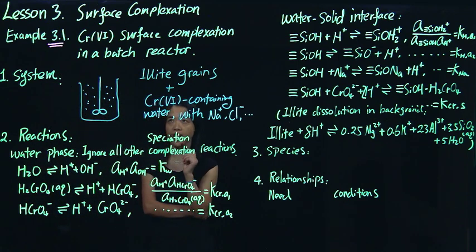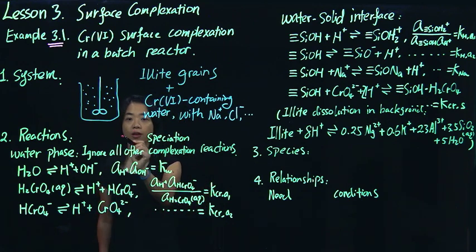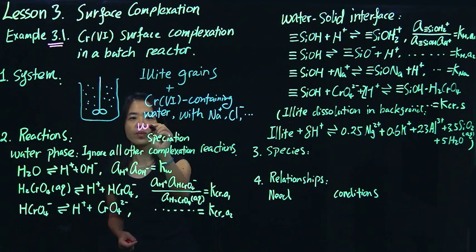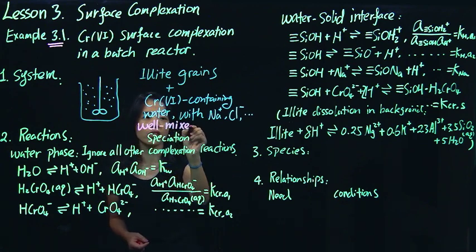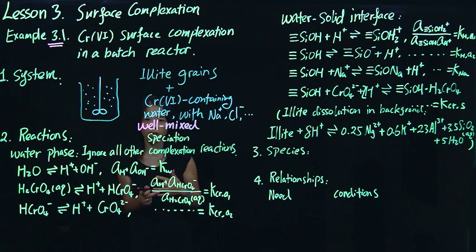You also have that in the online material. If we think about this system, we have a well-mixed batch reactor, meaning all the concentrations in the water phase will remain the same — uniform. So we don't really solve for concentration differences in different parts of the batch reactor.